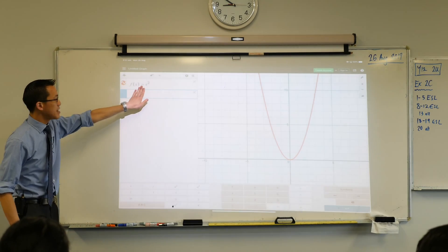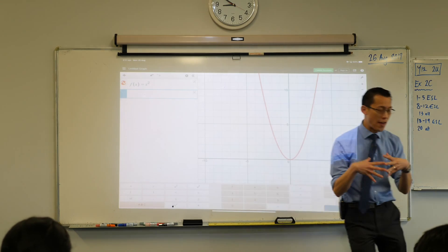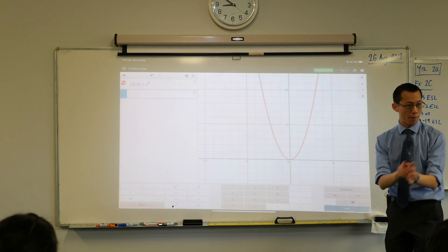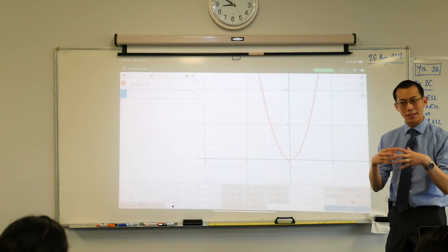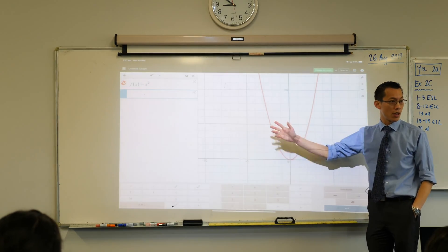After you've written f of x equals x squared, we're going to think about this parabola and also a family of functions similar to it. But before we do that, the thing we want to particularly be interested in is what is the derivative of this curve?